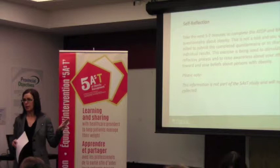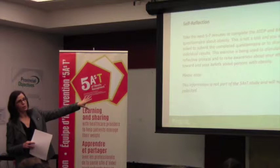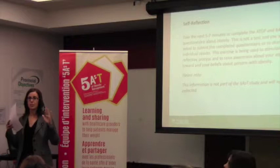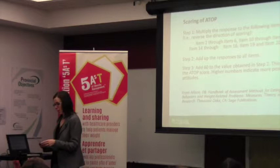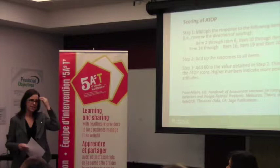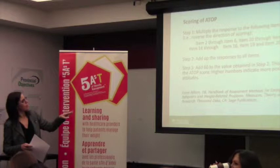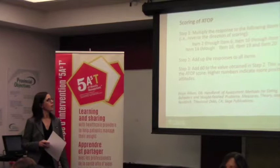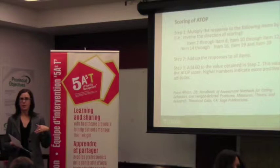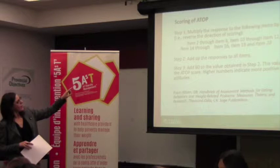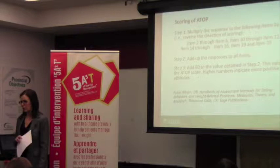For those of you who came in a little bit later, don't worry about feeling behind — we can just work through things. Here's the scoring. For the ATOP, which is the longer one, don't be intimidated — it's just adding. Each question is worth a different value. For step one, multiply the response to certain items by negative one — you're reversing the order of the scoring. So items 2 through 6, multiply those by negative one. If it was a negative two, multiply by negative one and it becomes positive two.